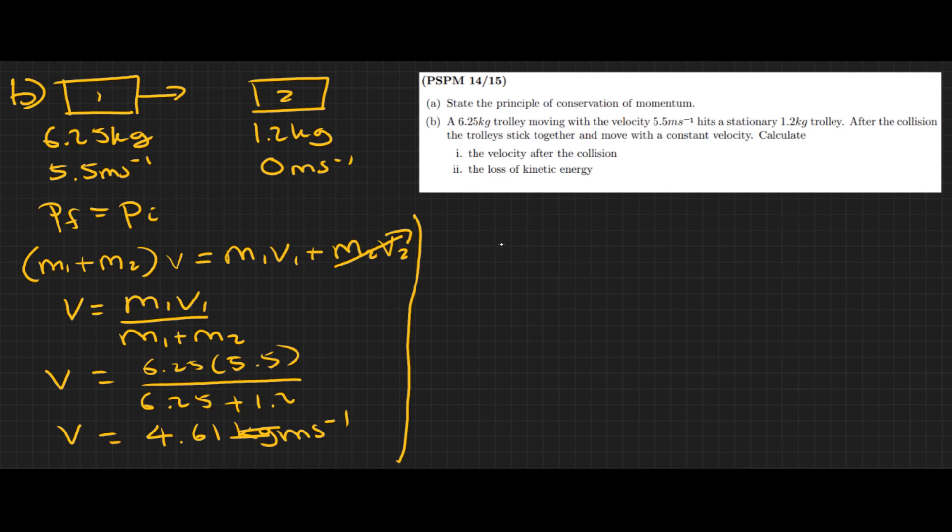Now we should look at the loss of kinetic energy. Part (b2): loss of kinetic energy. EL equals the final minus the initial. Of course you can change that to Ei minus Ef, but either way we're looking for the loss, so the positive and negative doesn't really matter. I'll just put the modulus there.